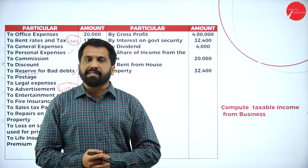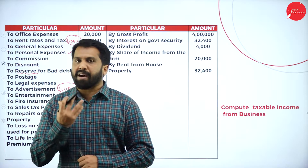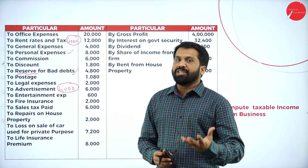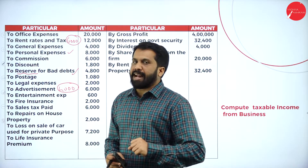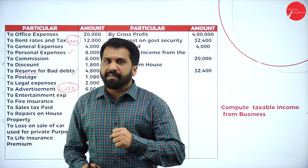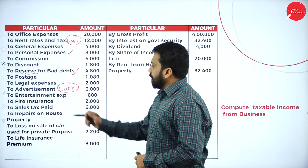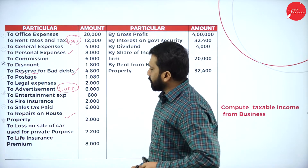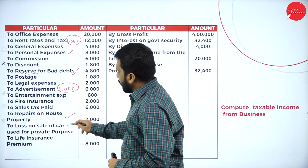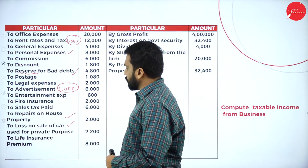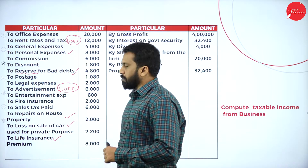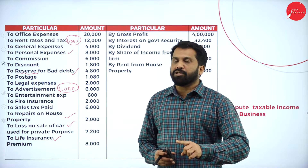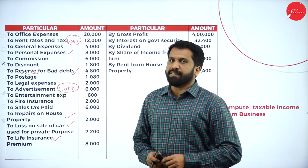Without paying sales tax, you cannot sell your goods. Right now we don't have sales tax — we have GST. All your indirect taxes are now replaced by GST. Then, repair on house property — that is personal, please take it. Loss on sale of car — that is personal, you are supposed to take it. Life insurance premium — remember, if it is fire insurance, it is part of business; life insurance is not part of business.